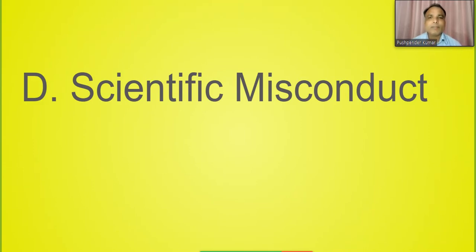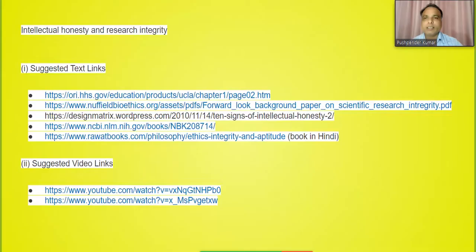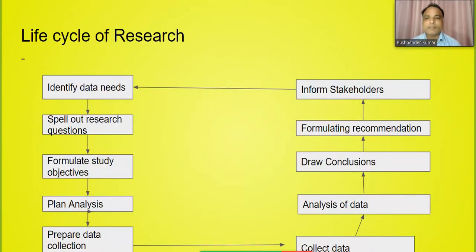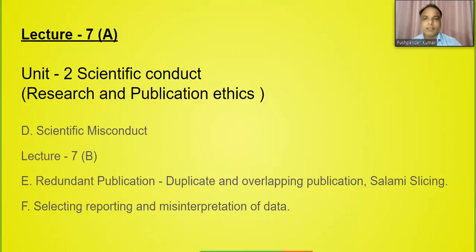What is scientific misconduct? Basically, when you think of your research, it is a scientific way of conducting research. If you want your research to be good, you should use the scientific way we have already discussed. The process includes: identify data, spell out research questions, formulate objective, plan analysis, prepare data collection and then collect data, analysis of data, draw conclusion, formulate recommendation and inform all the stakeholders.